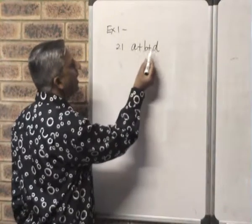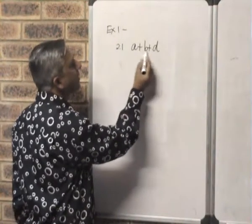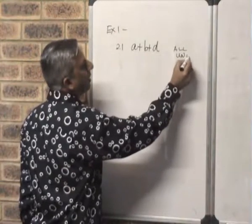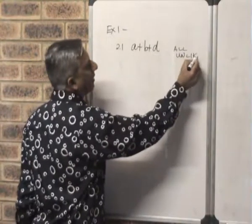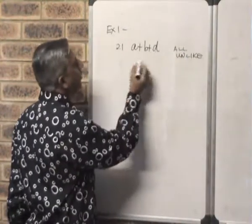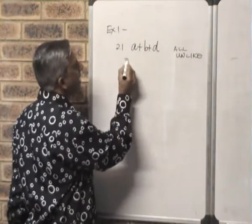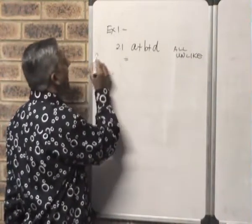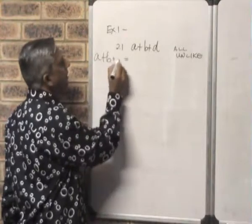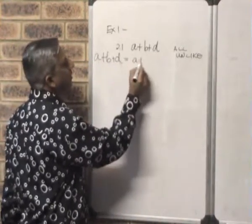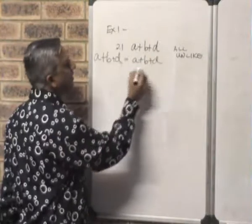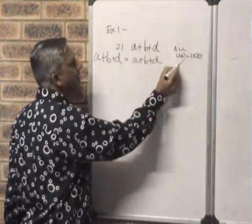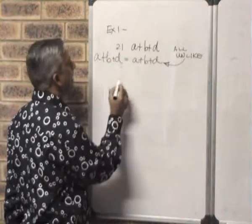What are these terms like? They are all unlike terms. Therefore, you cannot group them, and if you ask me to add this up, then the answer will be A plus B plus D. The answer will still be A plus B plus D because they cannot be added — they are unlike.